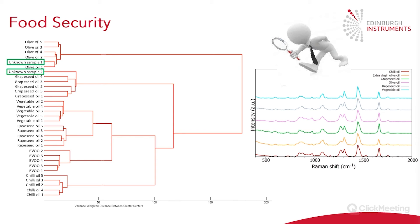The six oils studied were chilli oil, extra virgin olive oil, grapeseed oil, olive oil, rapeseed oil and vegetable oil. Five spectra were taken from each oil type, and there were also two unknown samples. As we can see from the spectra, they look very similar to the human eye and you wouldn't be able to identify the unknown just by looking. This is where chemometrics is a great tool in combination with Raman spectroscopy. Hierarchical cluster analysis was used to provide separation in the data, producing a dendrogram which groups data into clusters based on Ward's algorithm — simply thought of as a family tree representing the data with different levels of relatedness.